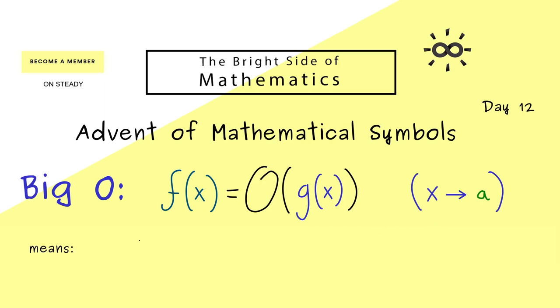Now, of course, this explanation that f does not grow stronger than g can be put into a formula where we use absolute values. So you would say the absolute value of f(x) is always less or equal than a fixed constant M times the absolute value of g(x).